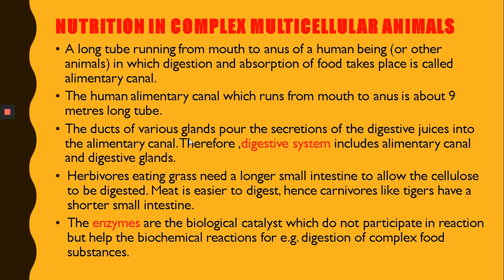Scientific research has shown that herbivores need to digest cellulose, which requires more time, so they have a longer alimentary canal — especially their small intestine is very long. In contrast, meat-eating carnivores like tigers have a smaller intestine because meat is easy to digest. So herbivores have a long alimentary canal and carnivores have a shorter one.